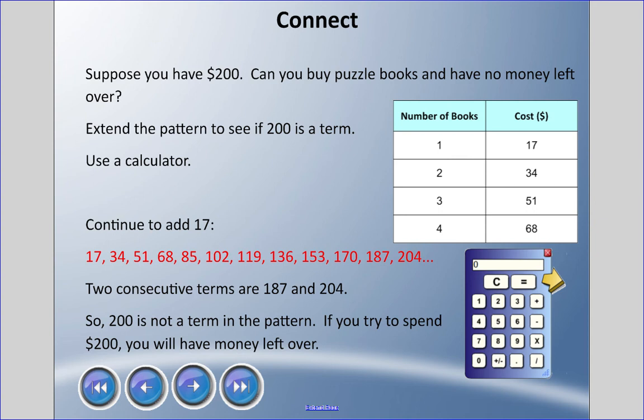Now suppose you had two hundred dollars — can you buy puzzle books and have no money left over? We could extend this pattern to see if two hundred is a term. In other words, will two hundred show up in the cost column? Can we pay exactly two hundred dollars, and if so, how many books is that?